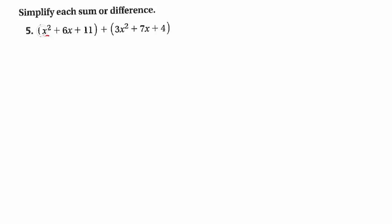Beginning with number 5, we're simplifying, or combining like terms. You can't combine x² with x, just like you can't combine a square centimeter with a regular centimeter. But you can combine x² with another x². Even though there's no coefficient written, there's an understood 1, so those combine to 4x². For the x terms, 7 and 6 come out to 13x. And the constant terms — like 11x⁰ — just add to 15.